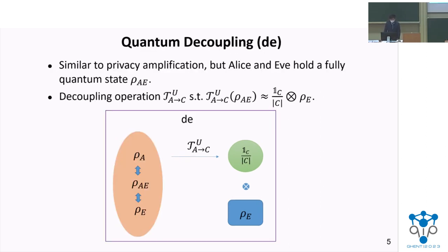As for quantum decoupling, the protocol is similar to privacy amplification, but this time Alice and Eve hold a fully quantum state. By applying a decoupling operation, Alice hopes to decouple her system from Eve's system.